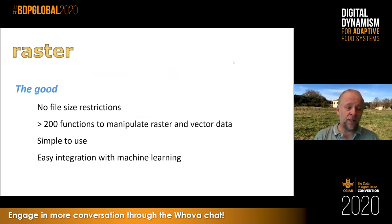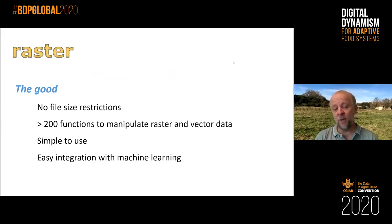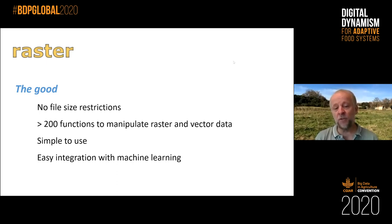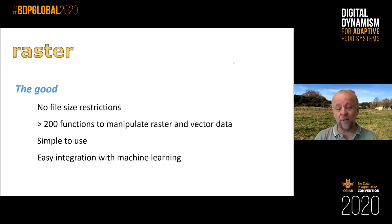What was good about raster? It had no file size restrictions, which was really important because most R software assumes you can load all data files into memory — which for spatial datasets is clearly not possible. The raster package worked around that by processing files chunk by chunk. It has many functions to manipulate raster data as well as vector data. The typical spatial analyst can find global, local, and focal functions — it's all there. We emphasized simplicity, trying to make it as easy to use as possible.